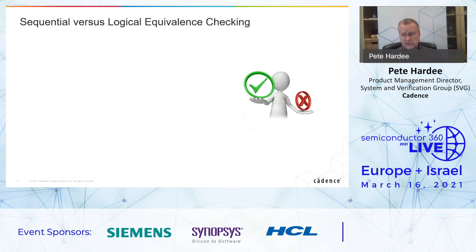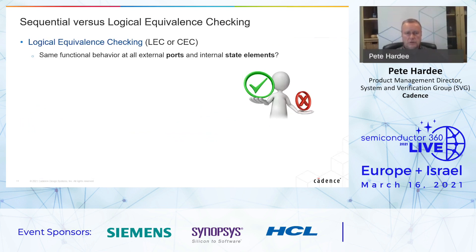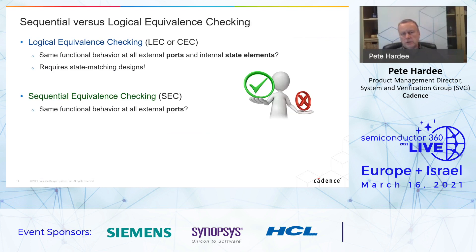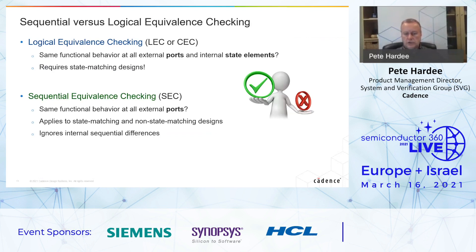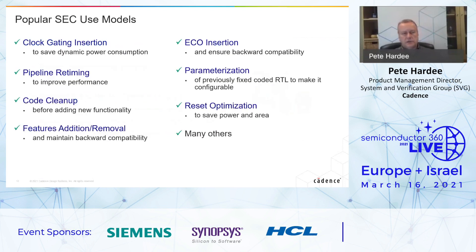Now let's look at sequential equivalence checking — an easy formal app for designers to pick up. First, let's understand what it is versus logical equivalence checking. Logical equivalence checking, also known as combinational equivalence checking, checks the same functional behaviour between a spec and an implementation version at external ports and all internal state elements — so it applies to state-matching designs only. Sequential equivalence checking also checks for the same functional behaviour at external ports, but applies to both state-matching and non-state-matching designs — it ignores internal sequential differences.